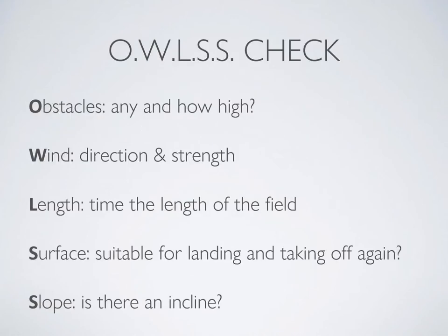The first thing you do after being given your scenario is pick your field — you can call this doing your OWLs check. First, look for obstacles: trees, power lines, buildings, mountains, anything that would prevent you from getting in on that field. Then look for wind — what direction it's coming from, knowing you always want to land into the wind whenever possible, and what strength it is. Is it crosswind or directly down your field?